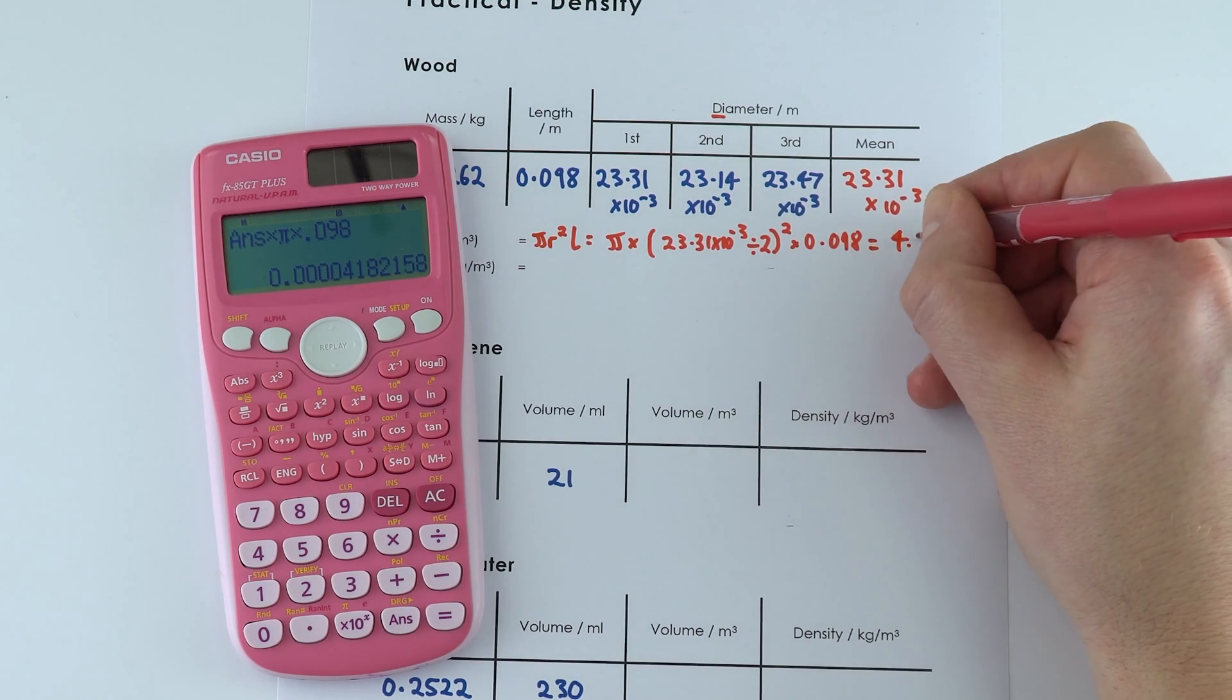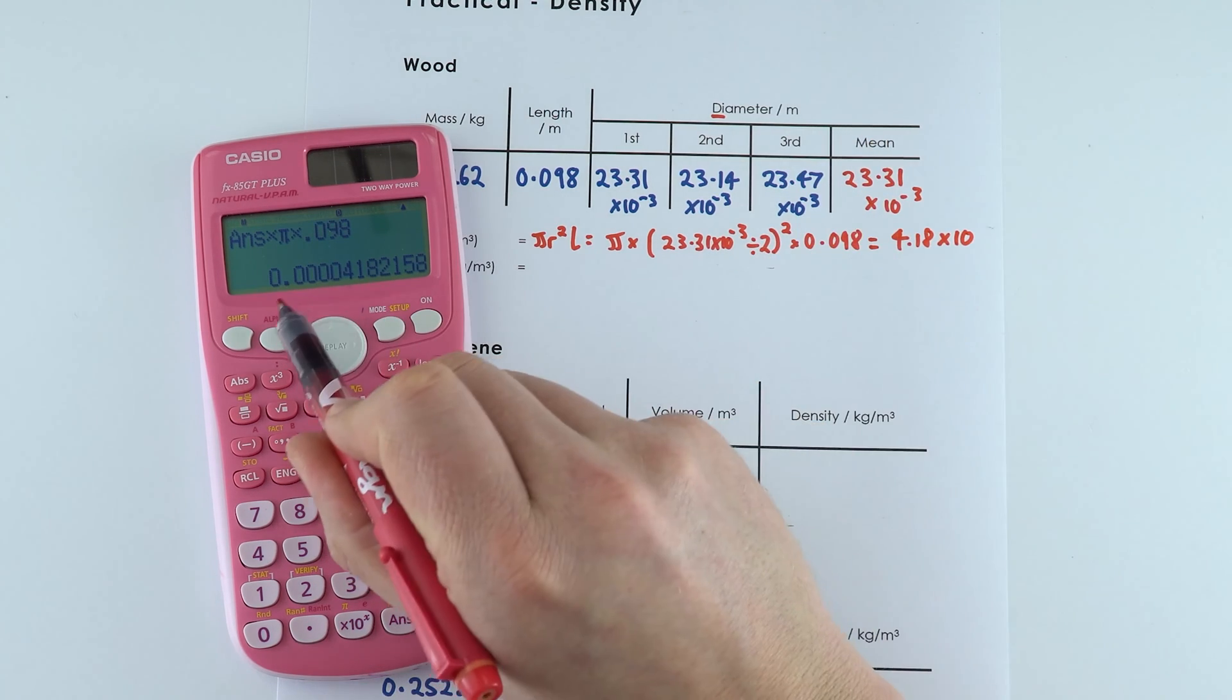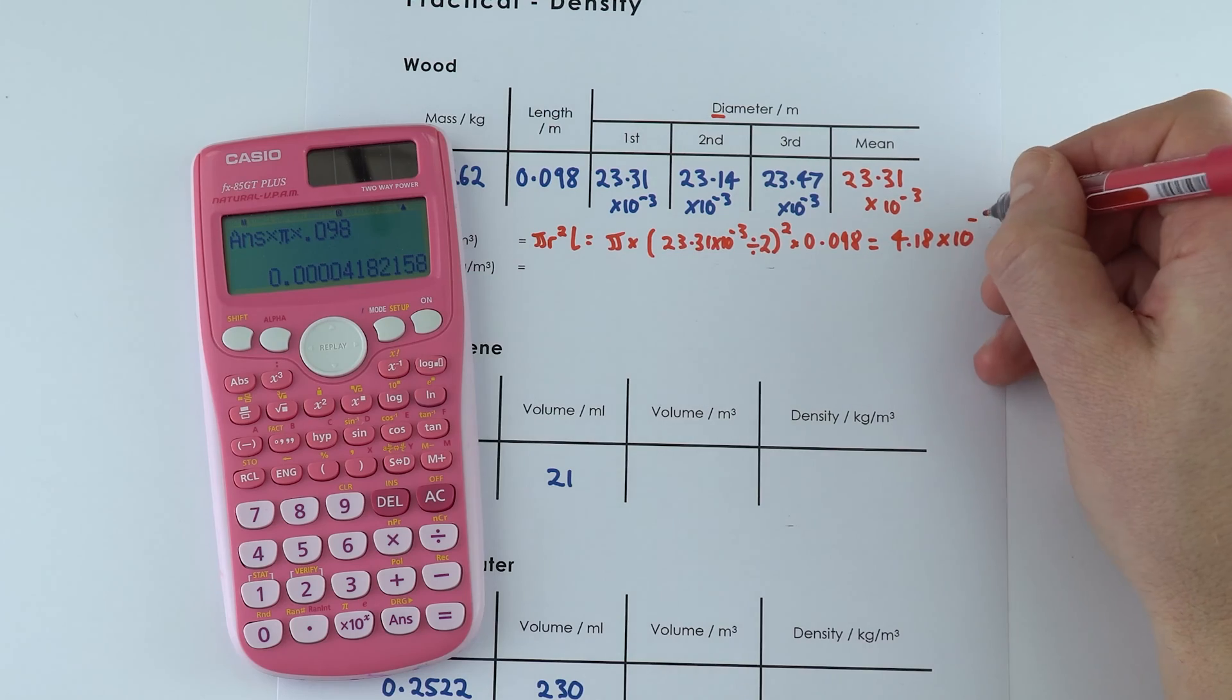So that's equal to 4.18 times 10 to the 1, 2, 3, 4, 5, 10 to the minus 5 meters cubed.